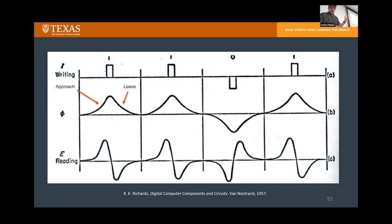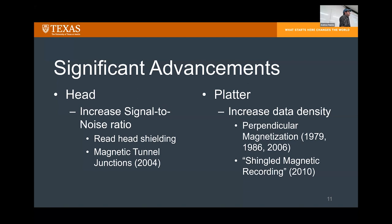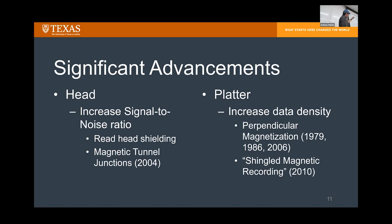Those are the signals from the early 1950s, but there have been many advancements over the last 70-odd years. They fall into two main categories: advancements in the head — reading and writing — and advancements in the platters themselves. For the head, the single goal is increasing the signal-to-noise ratio so you can detect smaller and smaller changes in magnetization. Two straightforward advancements include adding shielding to the read head to block extraneous fields from other tracks, and replacing induction with magnetic tunnel junctions.